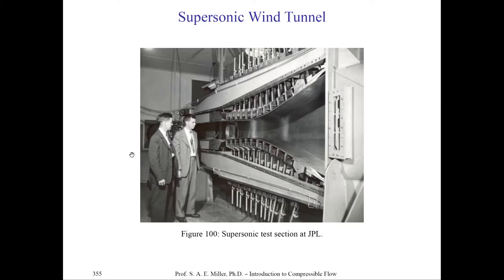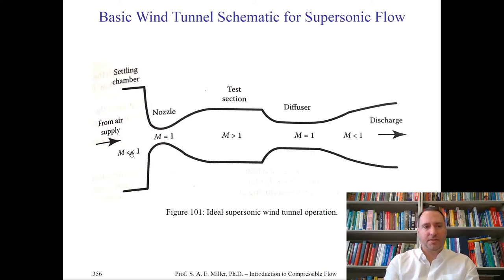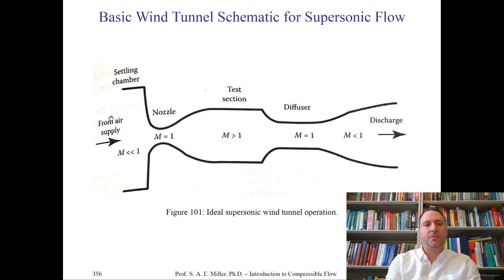Let's look at a basic schematic of the perfect or ideal supersonic tunnel in its operating condition — not startup or shutdown, but ideal isentropic operation. In reality there are always systems of shocks, expansions, and losses, but if our wind tunnel were perfect in every way with isentropic flow, this is what we'd ideally have. This is an open wind tunnel — the flow moves from left to right and discharges into the ambient environment.